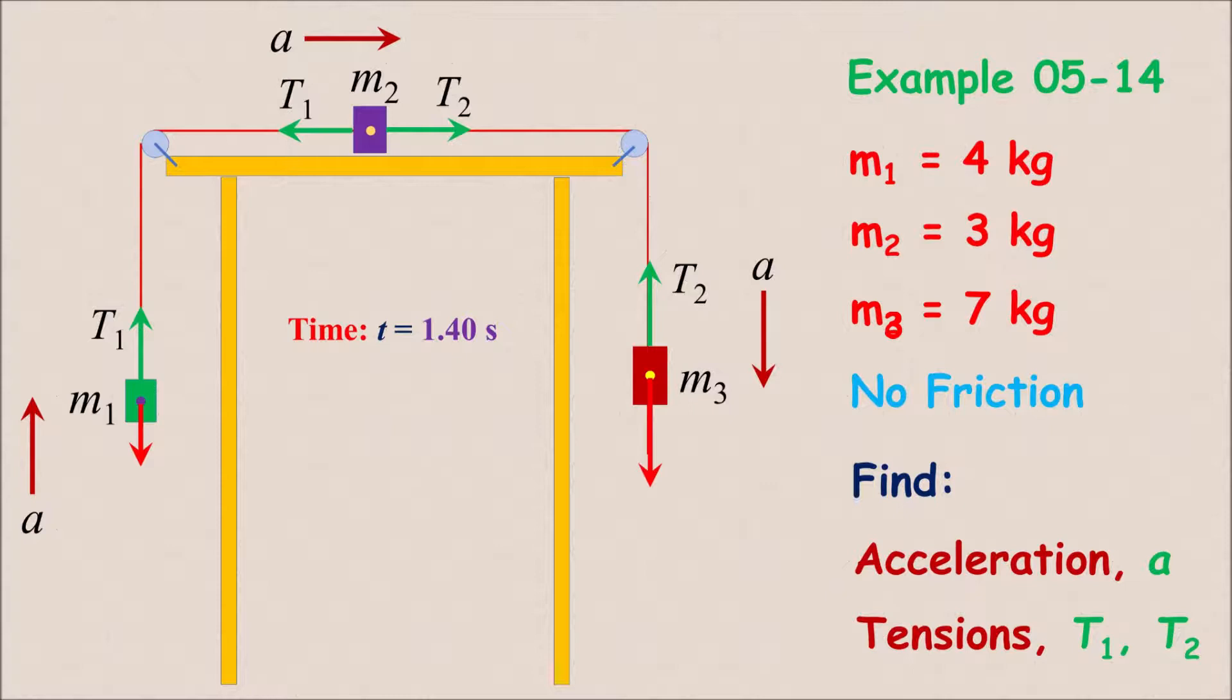Note that since the strings are massless and pulleys are massless and frictionless, the tensions on either side of each pulley is the same, but the tension on the left and right side of m2 are different. Also, because the strings have fixed lengths, the magnitude of acceleration of the blocks are the same.